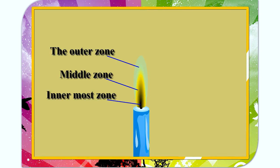In the middle zone, there is not enough air for complete burning of wax. Therefore, burning of wax vapor produces carbon particles and carbon monoxide. The carbon particles become white, hot and emit light. This zone is not hot.